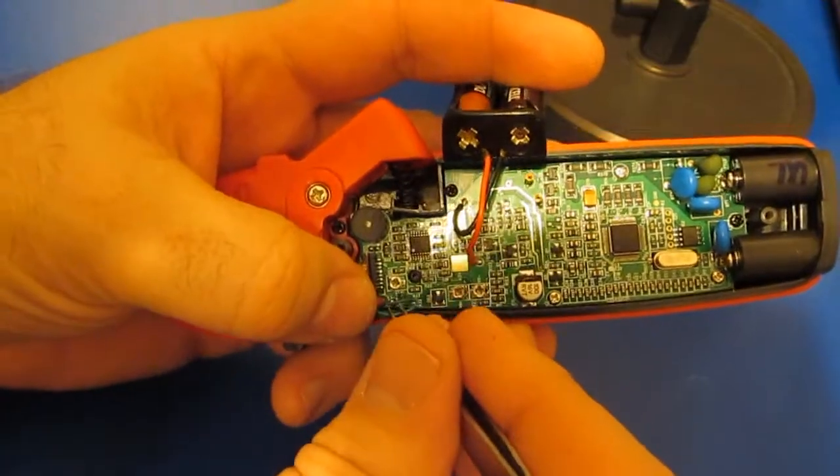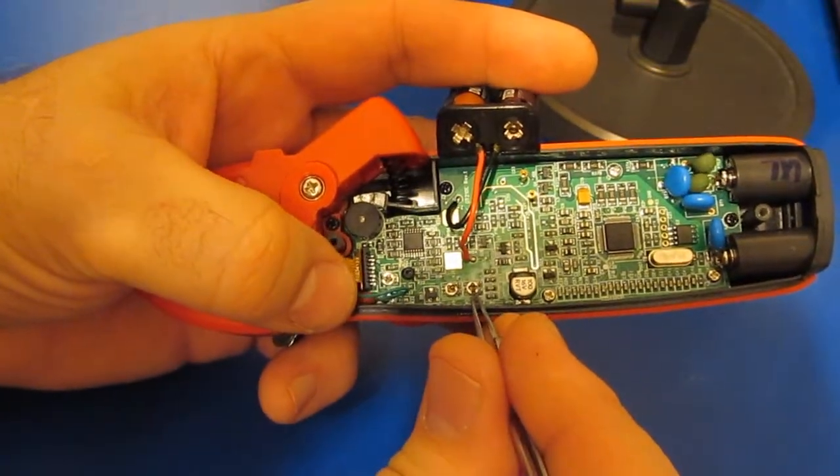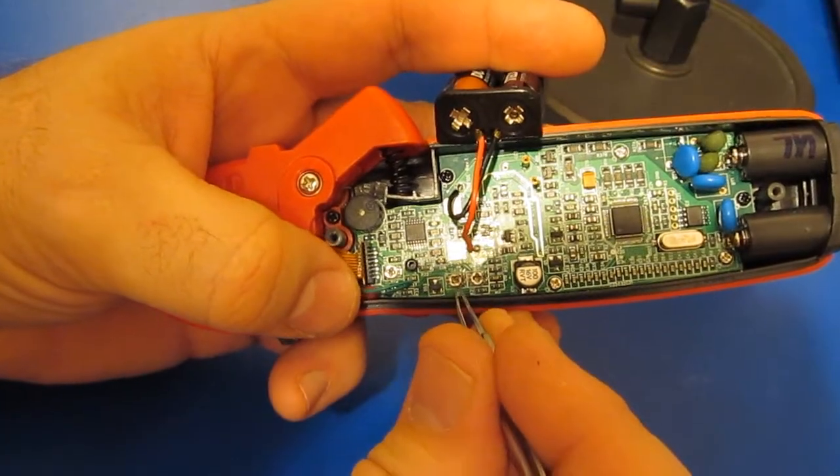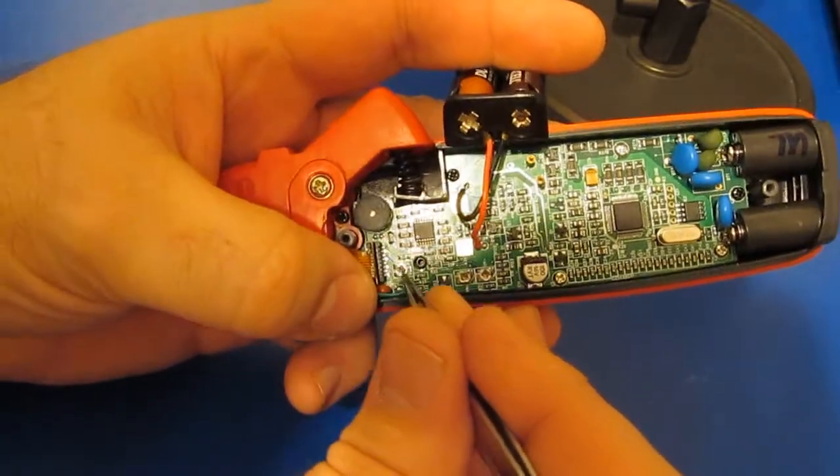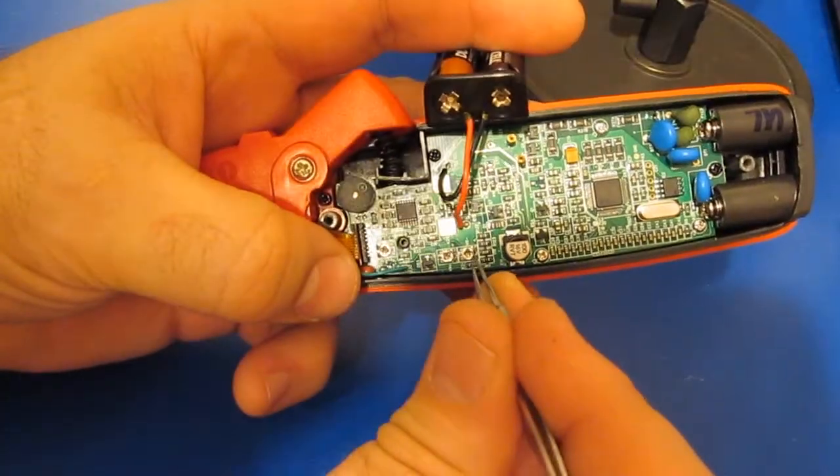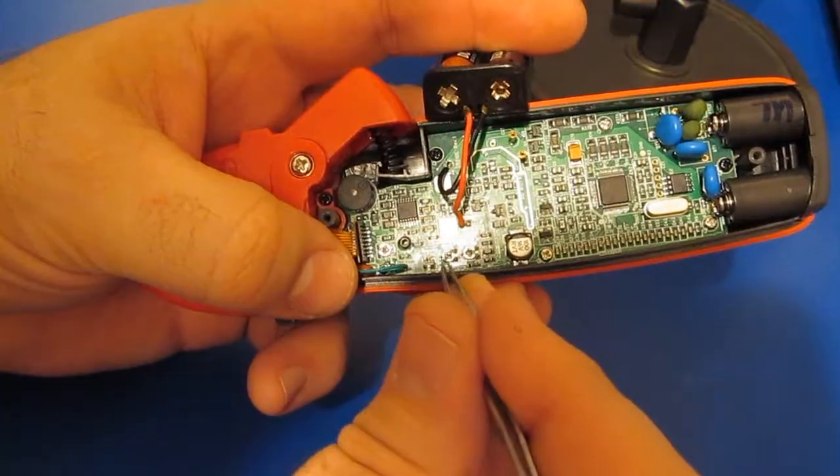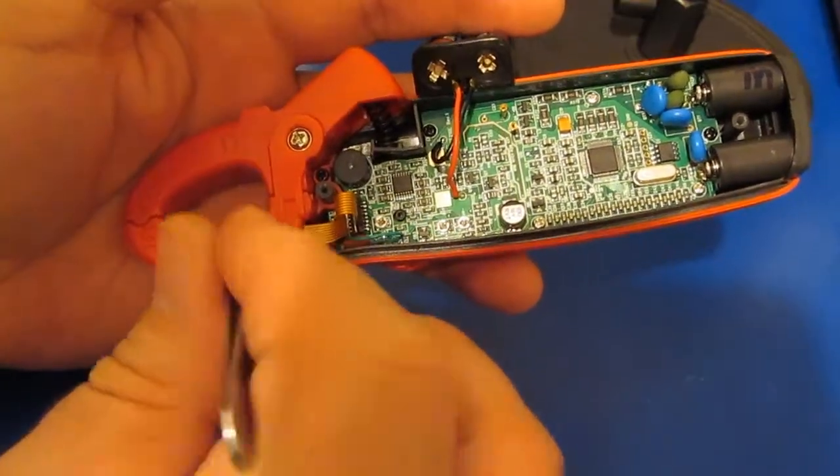Also on the bottom, you notice that there's three potentiometers. There's a VR minus. And then a VR plus. And then VR4. VR minus is the offset adjustment. And then these two potentiometers are setting up the null for the two sensors up in the head.